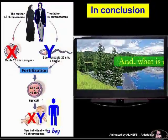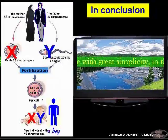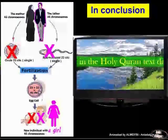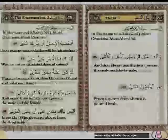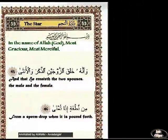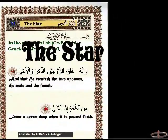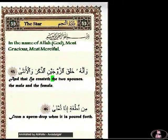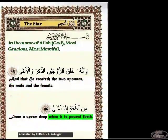What is extraordinary is that this is stated twice, with great simplicity, in the Holy Quran — a text dating back to the 7th century. This is the first Quranic text which relates from what the human's gender is determined. This concerns verses 45 and 46 of chapter 53, 'The Star': 'And that he created the two spouses, the male and the female, from a sperm drop when it is poured forth.'